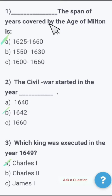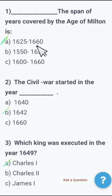MCQ number one: What is the span of years covered by the Age of Milton? The options are: A) 1625 to 1660, B) 1550 to 1630, C) 1600 to 1660. The right option is A — the Age of Milton covers 1625 to 1660. Very important MCQ, and inshallah at least five to ten of these MCQs will definitely come in your paper.